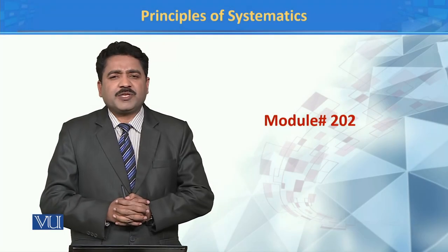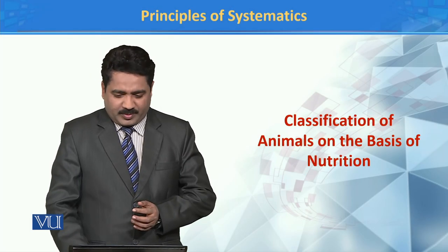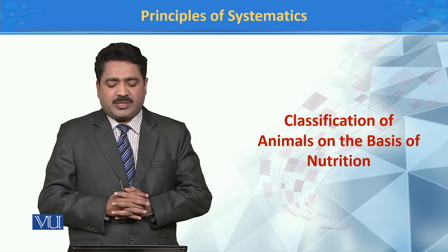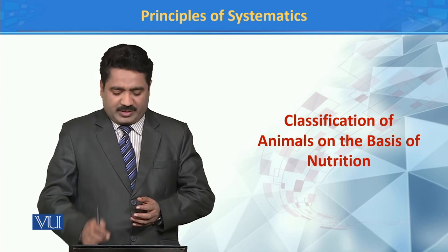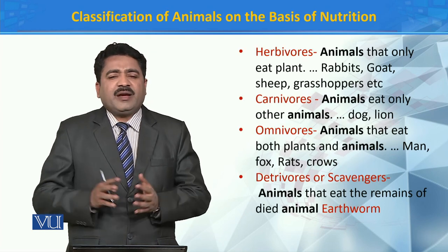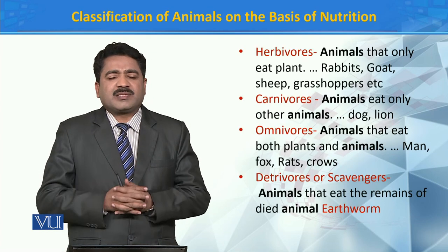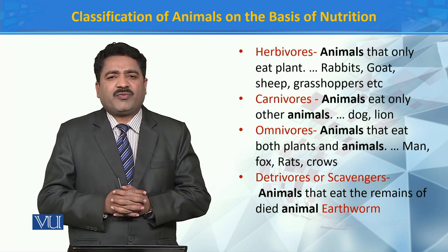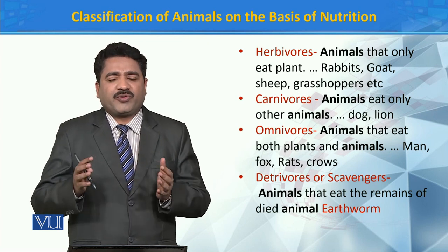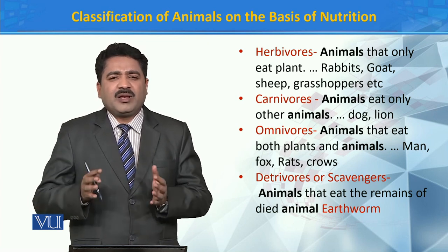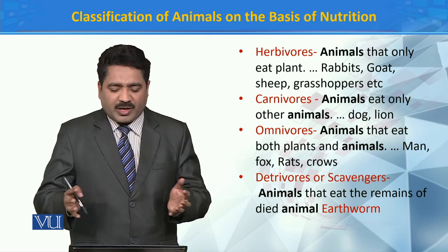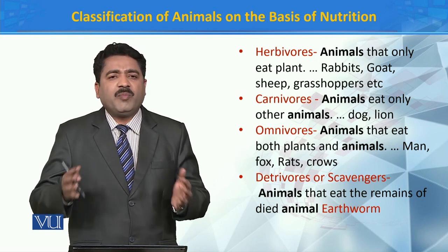Principles of Systematics, module 202 — Classification of Animals on the Basis of Nutrition. We can divide animals into various categories on the basis of type of nutrition. For example, we have Herbivores, we have Carnivores, we have Omnivores,